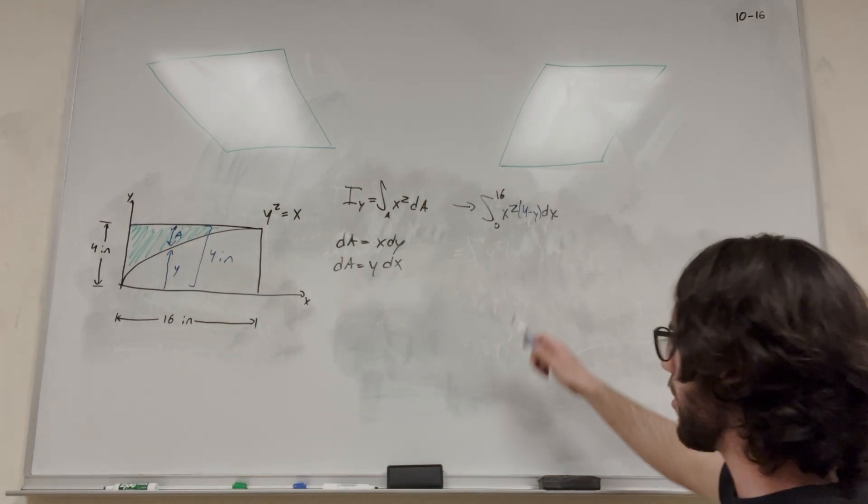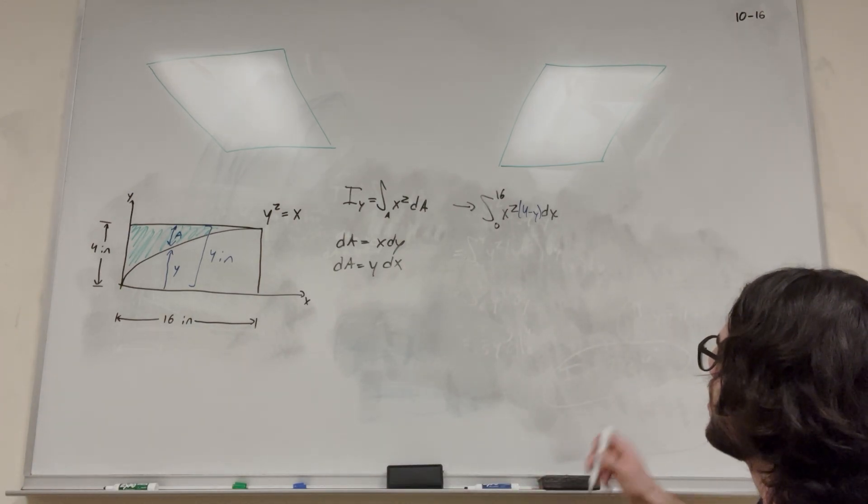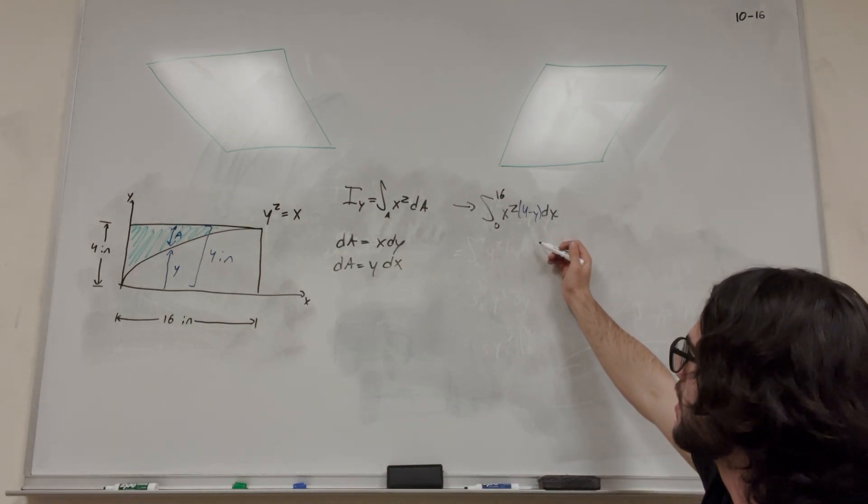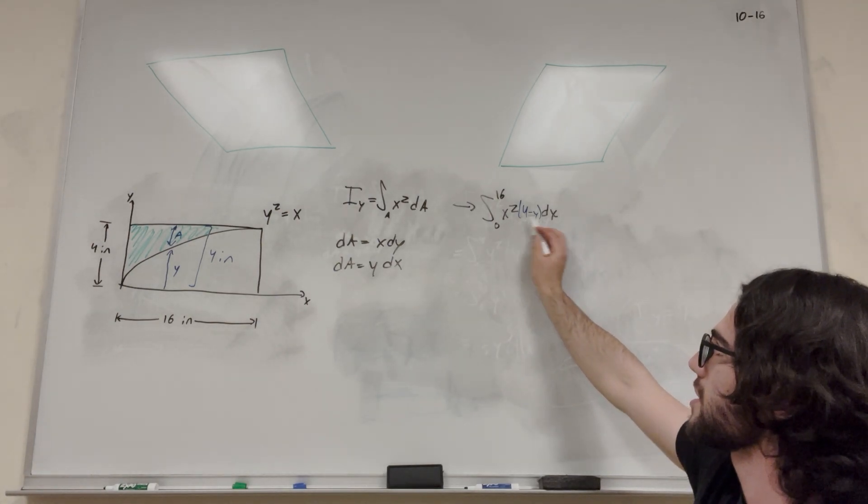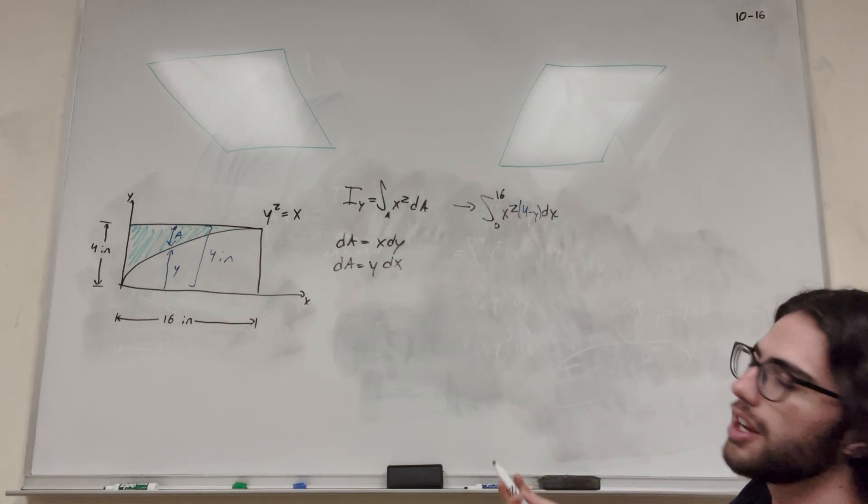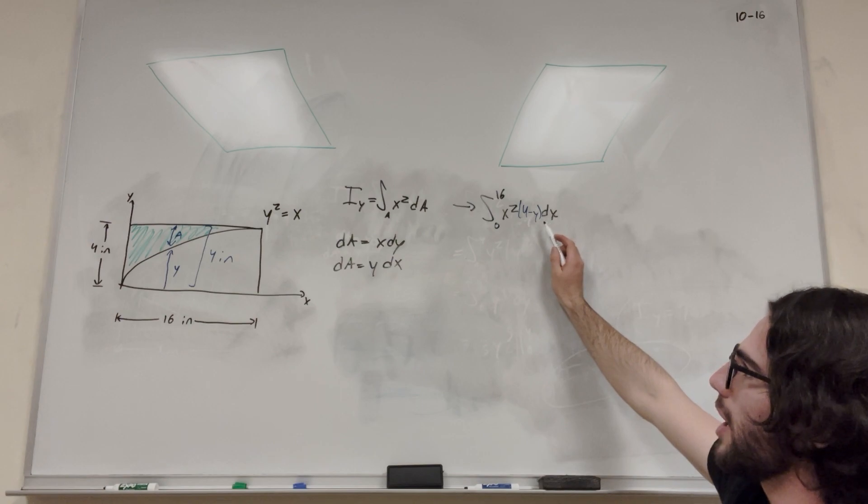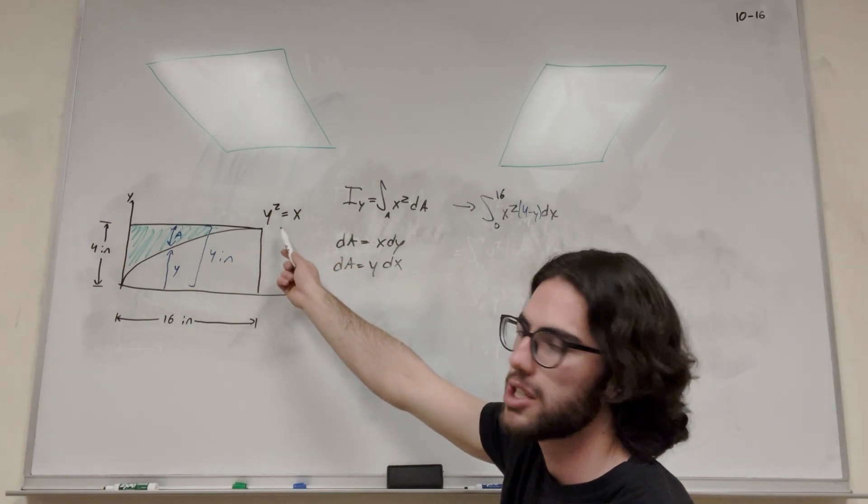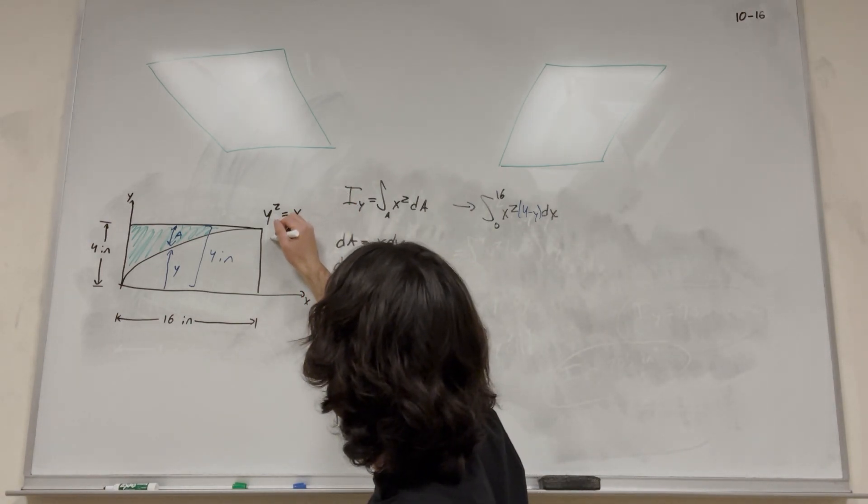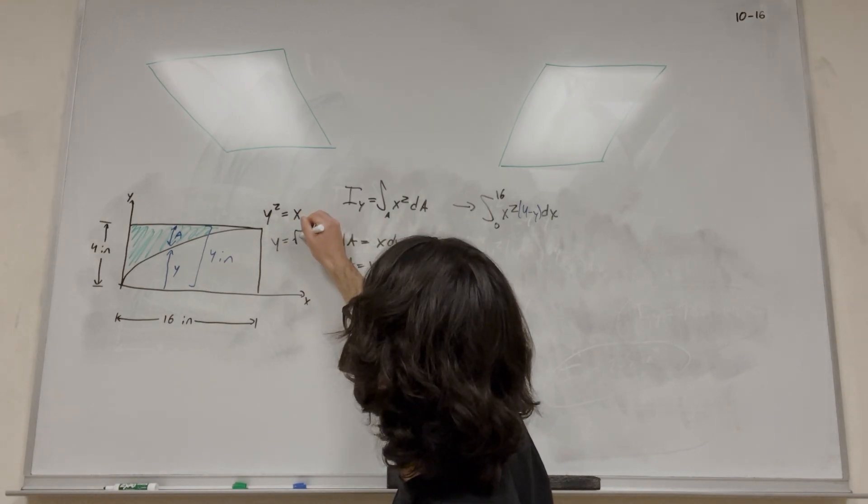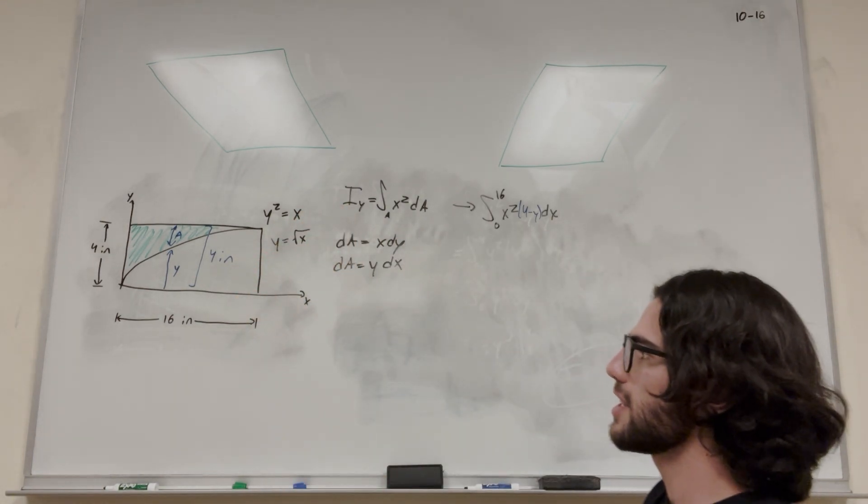Now we have a y in our term. We have x, we have dx, we have the bounds. We're good, but we need to get rid of this y. Like I said, y is defined by y squared equals x. So this becomes y equals square root of x. Technically plus or minus, but in this case it's not going to matter.